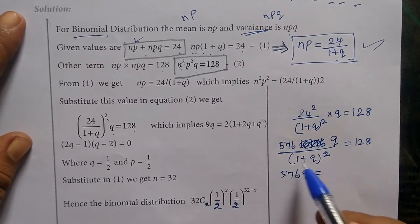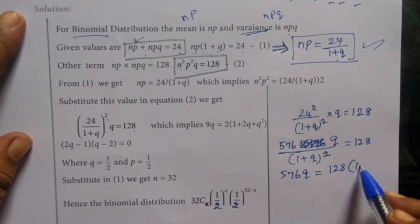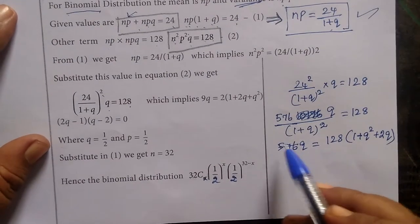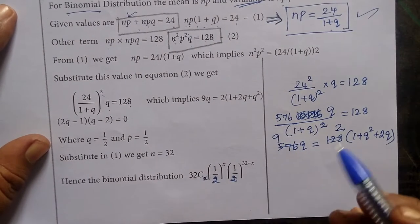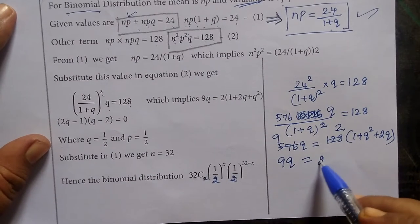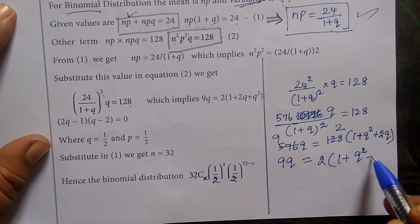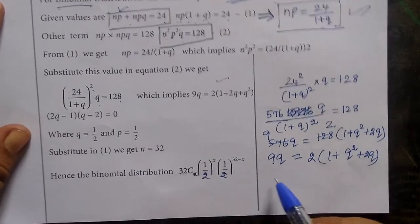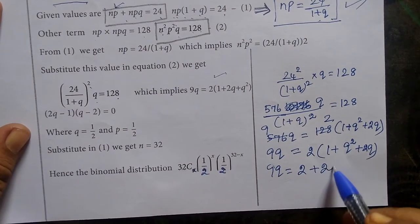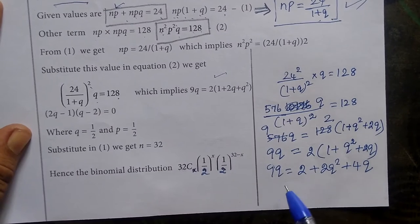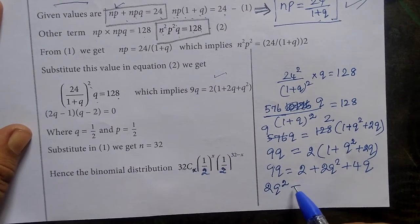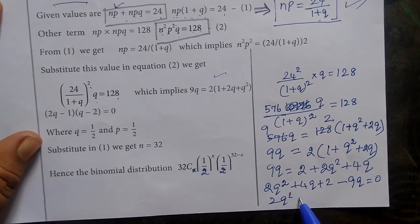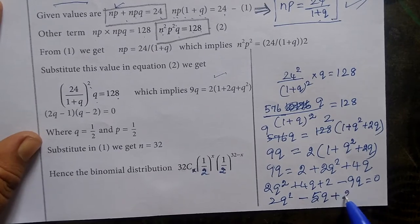So we have 1 plus q squared equals 128. Expand: 1 plus q squared plus 2q. Put 2 plus 2q squared then 4q, plus 9q. So 2q squared plus 4q plus 2 minus 9q equal to 0. So 2q squared minus 5q plus 2 equal to 0.